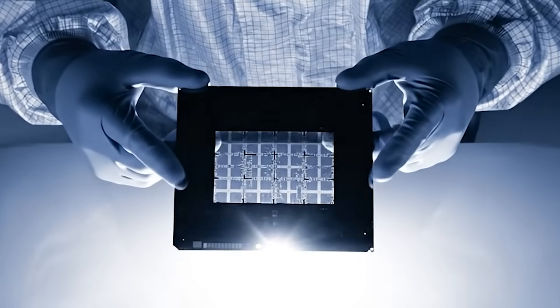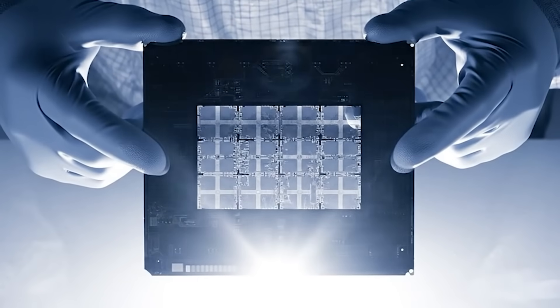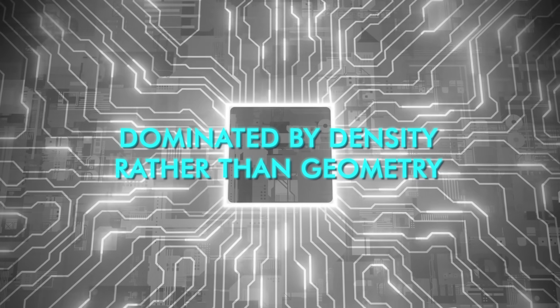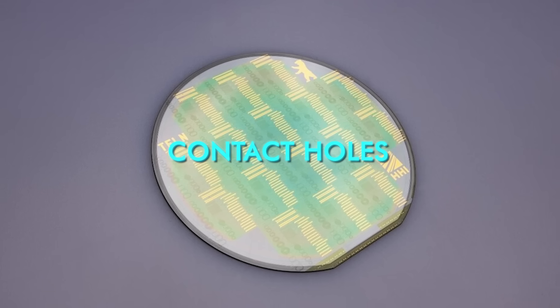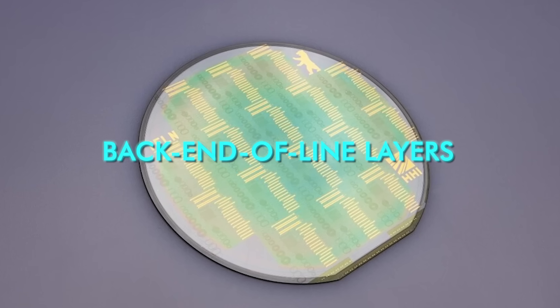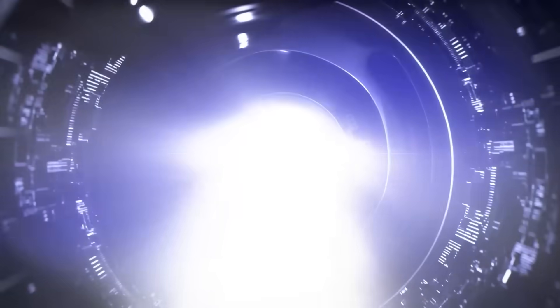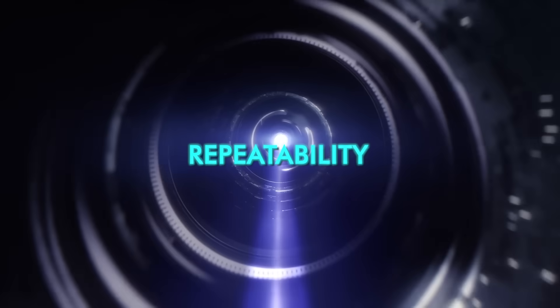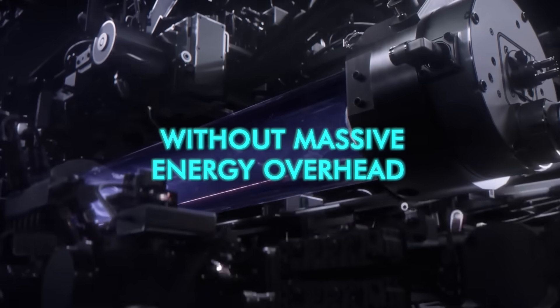Modern logic chips are not patterned uniformly. Some layers are brutally complex and alignment-critical. Others are repetitive and dominated by density rather than geometry, such as contact holes, vias, and certain back-end-of-line layers. These layers do not require EUV's full optical sophistication. They require consistency, repeatability, and yield without massive energy overhead.